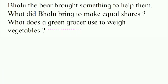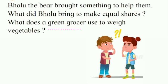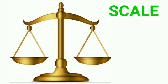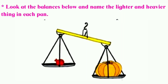Chintu asked 'How?' and Bholu the bear brought something to help them make equal shares. What did Bholu bring? It is what a green grocer uses to weigh vegetables. When you go to the market, you see the vegetable vendor weighing vegetables using this. It is called a scale.